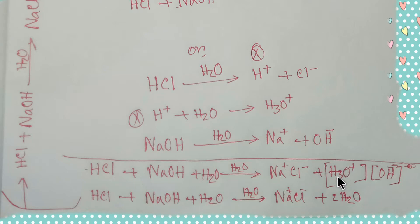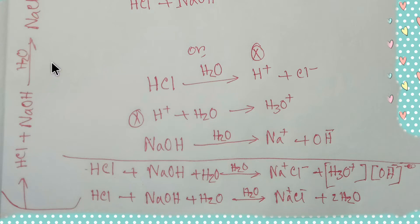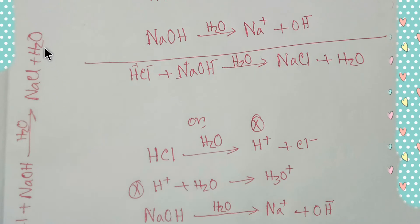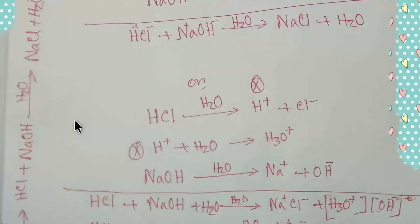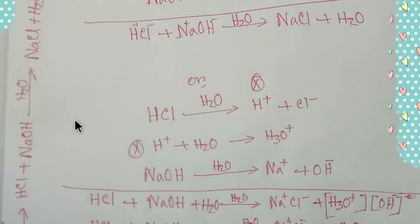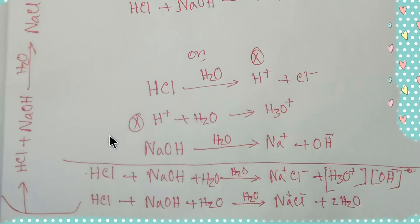We can write this reaction such that two molecules of water are involved — one is produced and one is deducted — giving us the overall neutralization reaction between acid and base according to Arrhenius theory. This is the neutralization reaction.